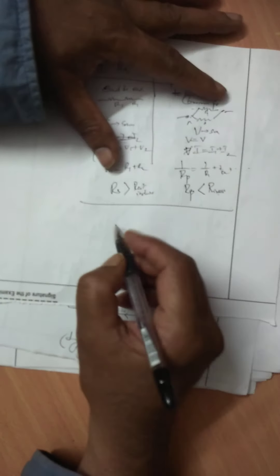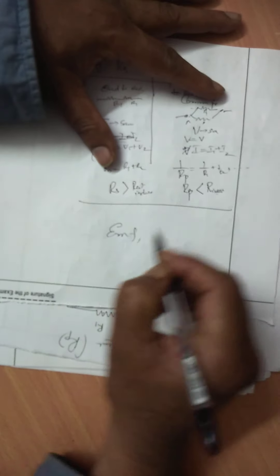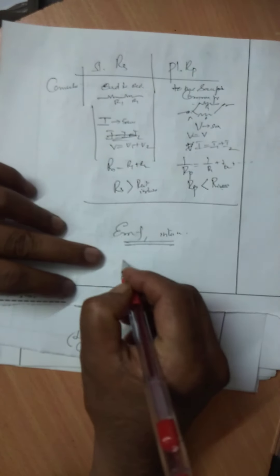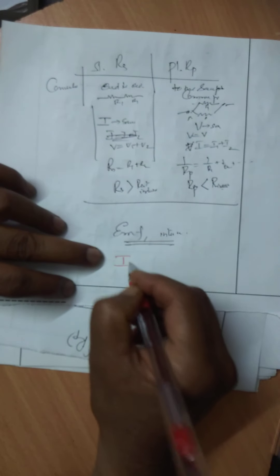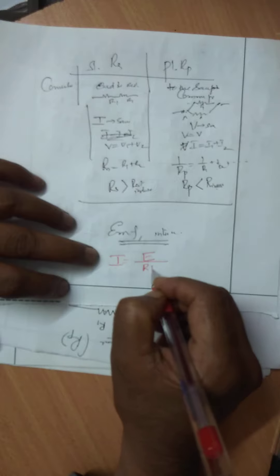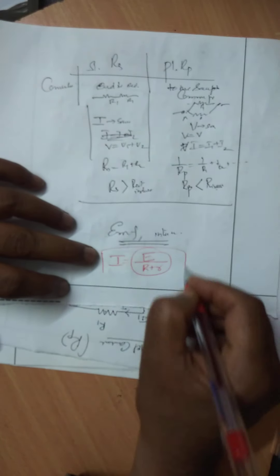Next class we will cover electromotive force and internal resistance, and derive an expression for current equal to EMF divided by total resistance. That will be a three-mark question and it is easy to do. Thank you.